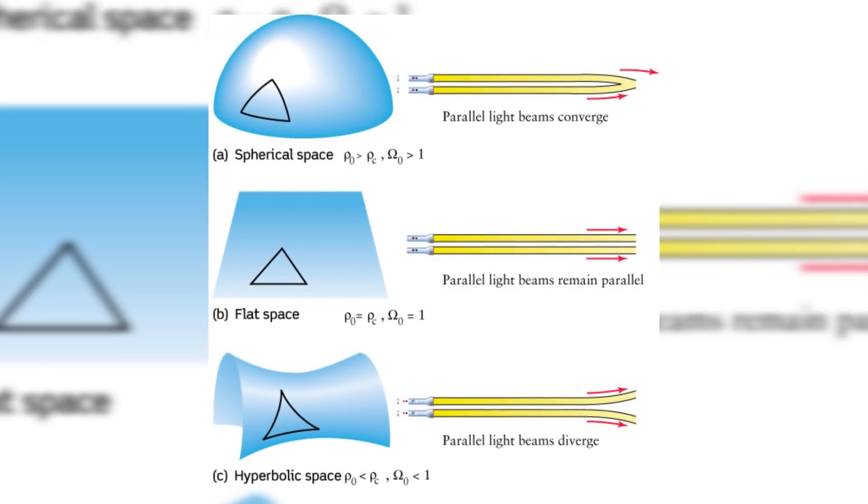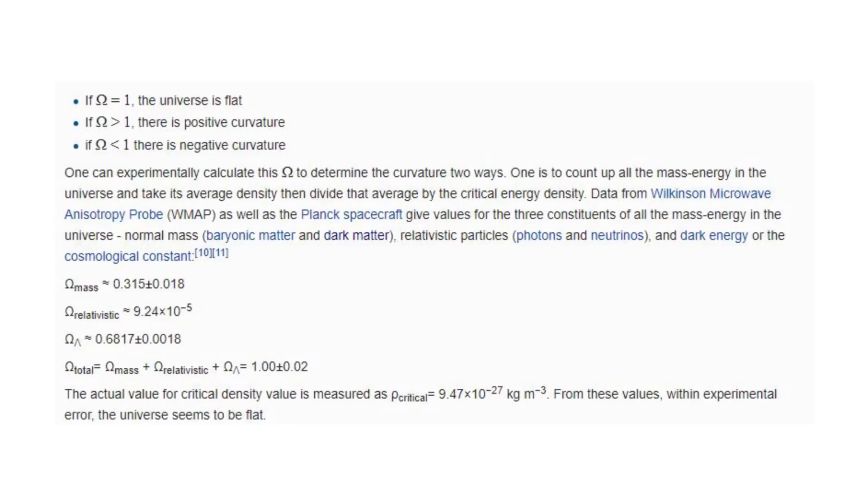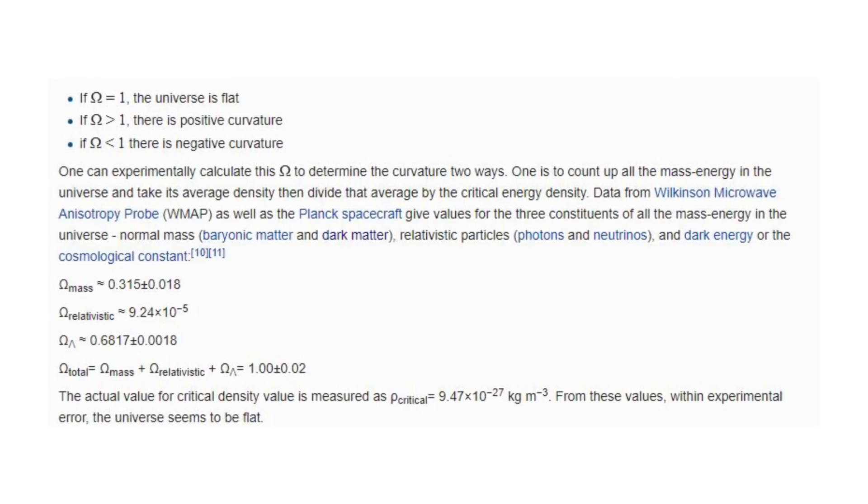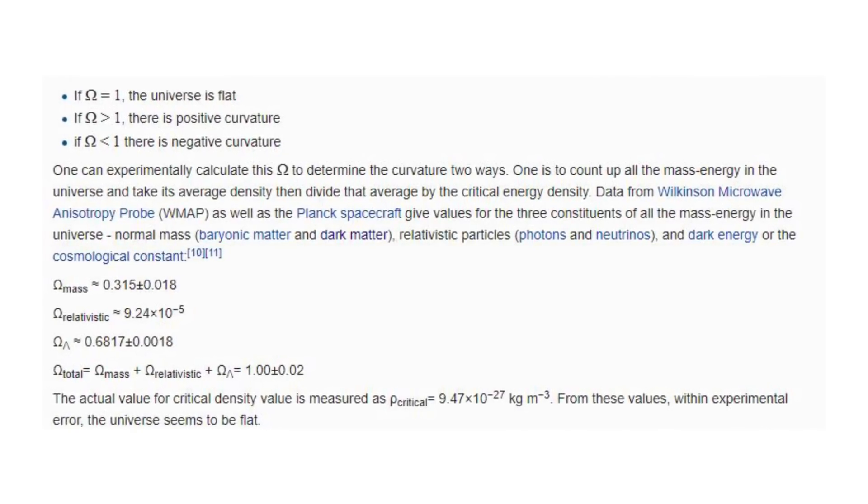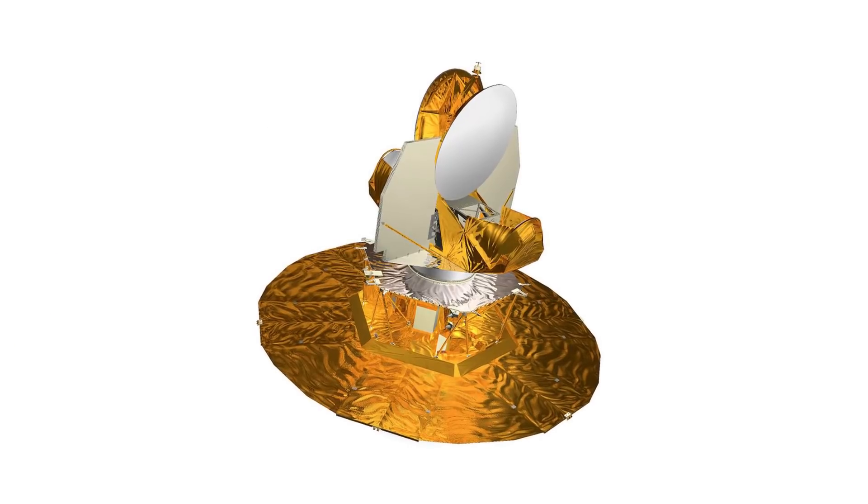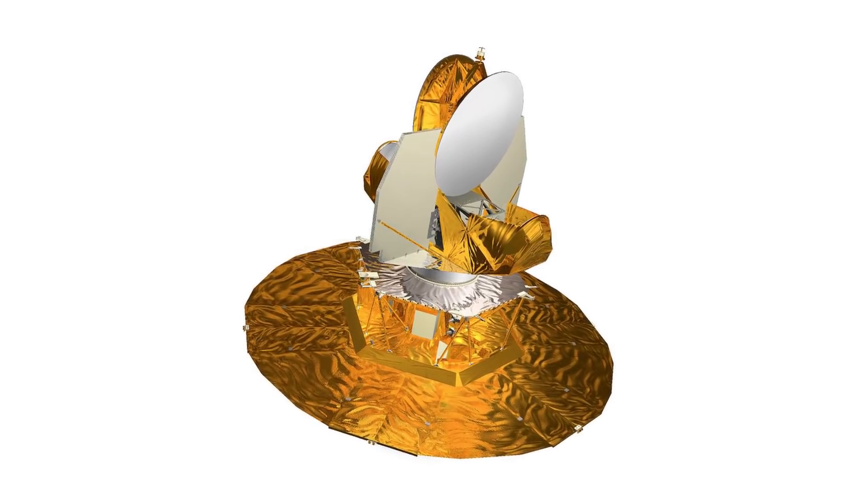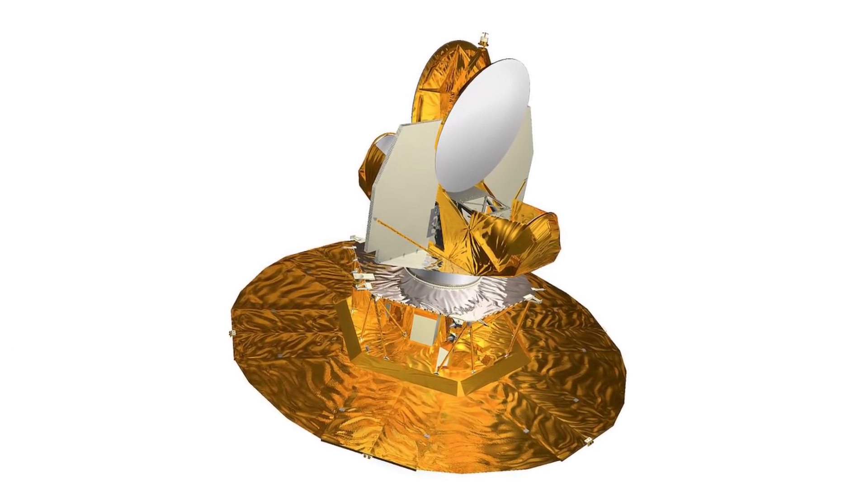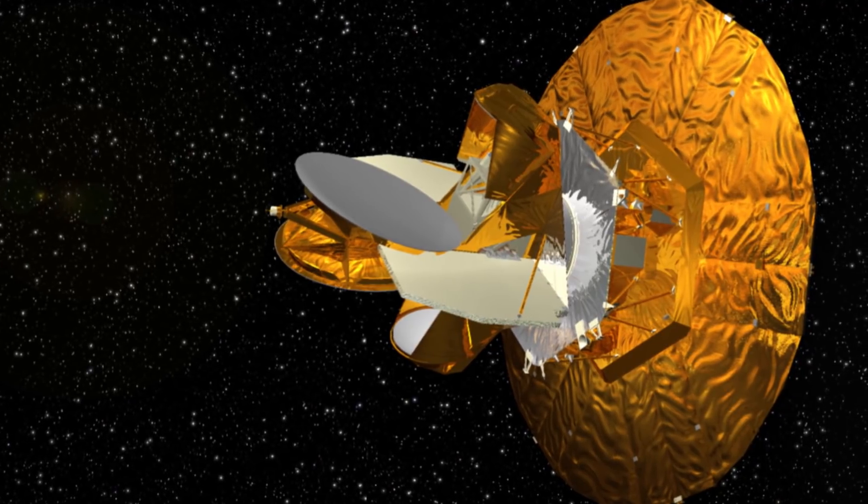This can be calculated in two ways. First, you can add up all the mass energy in the universe, average it out, and divide it by the critical energy density. When this is done, using data obtained from the Wilkinson Microwave Anisotropy Probe and the Planck spacecraft, we find a density parameter of 1, plus or minus 0.02.